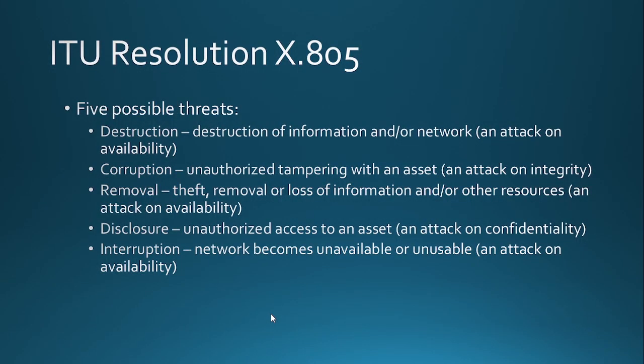These are the ITU Resolution X805 on network security. According to the ITU, there are five possible threats: destruction, corruption, removal, disclosure, and interruption. Destruction is the destruction of information and/or network — an attack on availability. Corruption is unauthorized tampering with an asset — an attack on integrity. Removal is the theft, removal, or loss of information and/or other resources — an attack on availability. Disclosure is unauthorized access to an asset — an attack on confidentiality. Interruption is when a network becomes unavailable or unusable — an attack on availability.